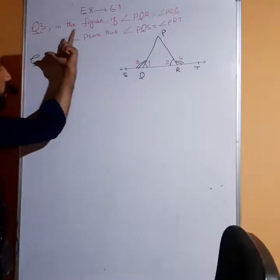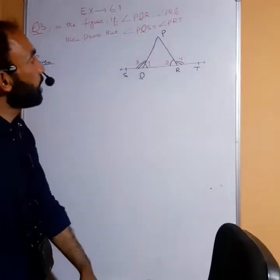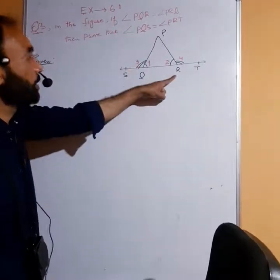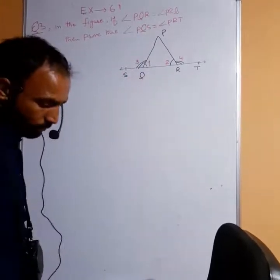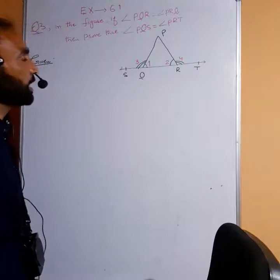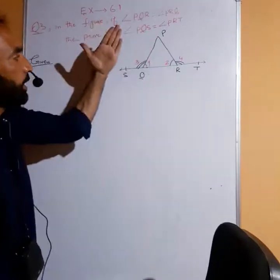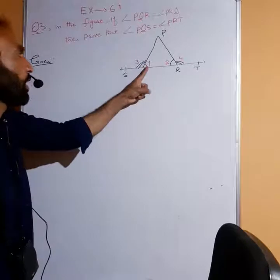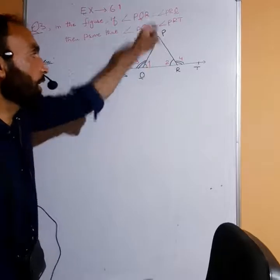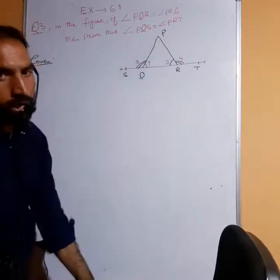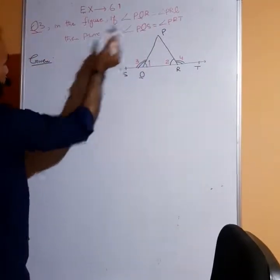In the figure, if angle PQR equals angle PRT — angle 1 equals angle PRT — angle 2. The hint is: angle PQR is angle 1, and angle PRQ is angle 2.